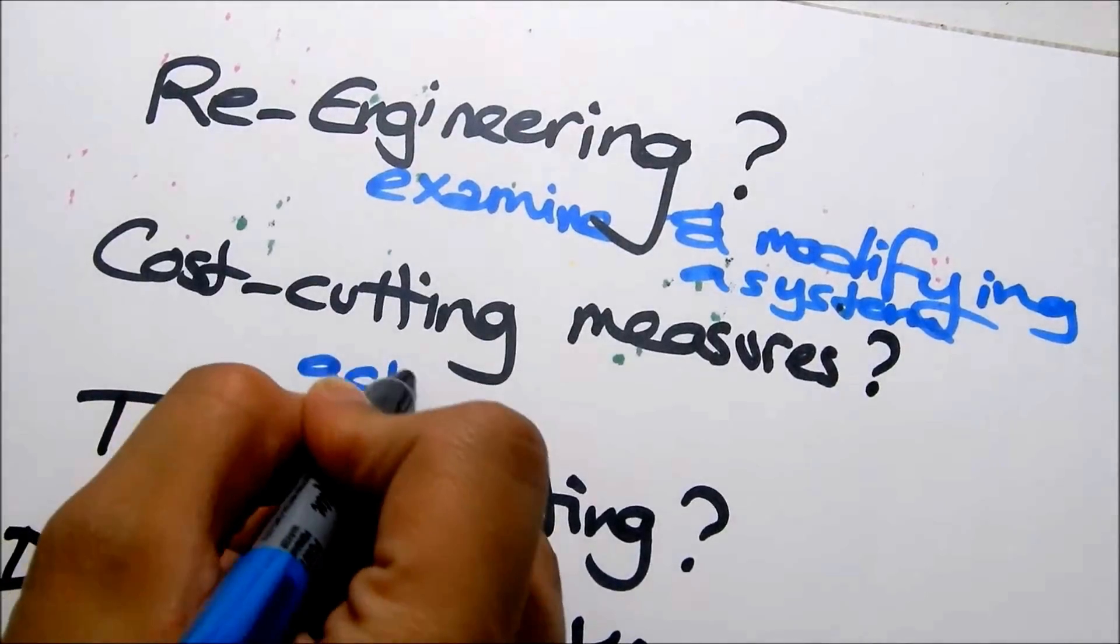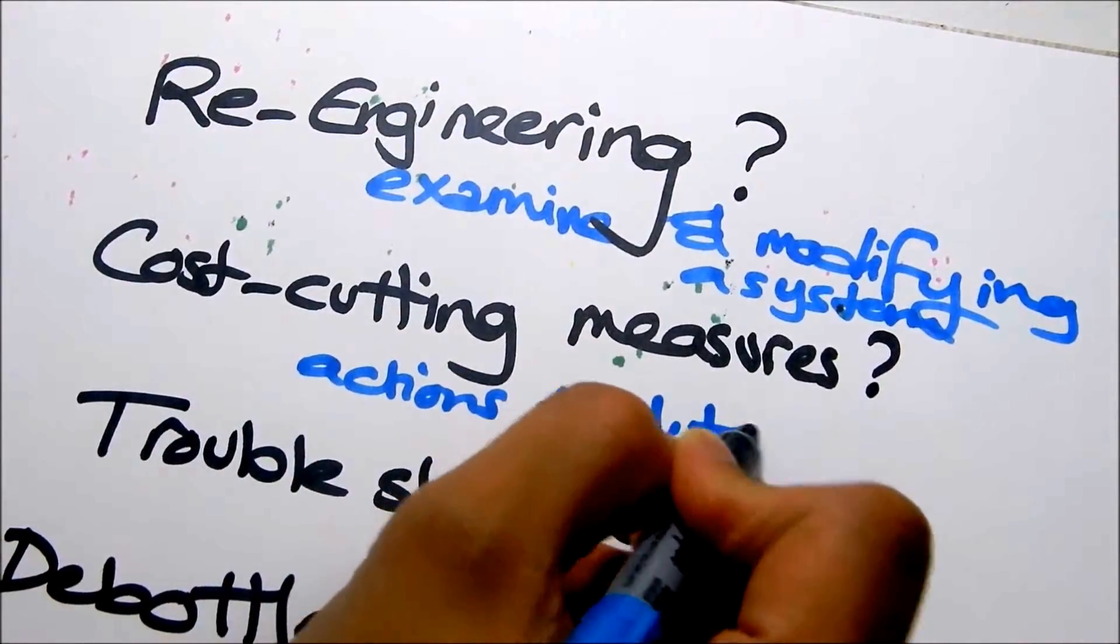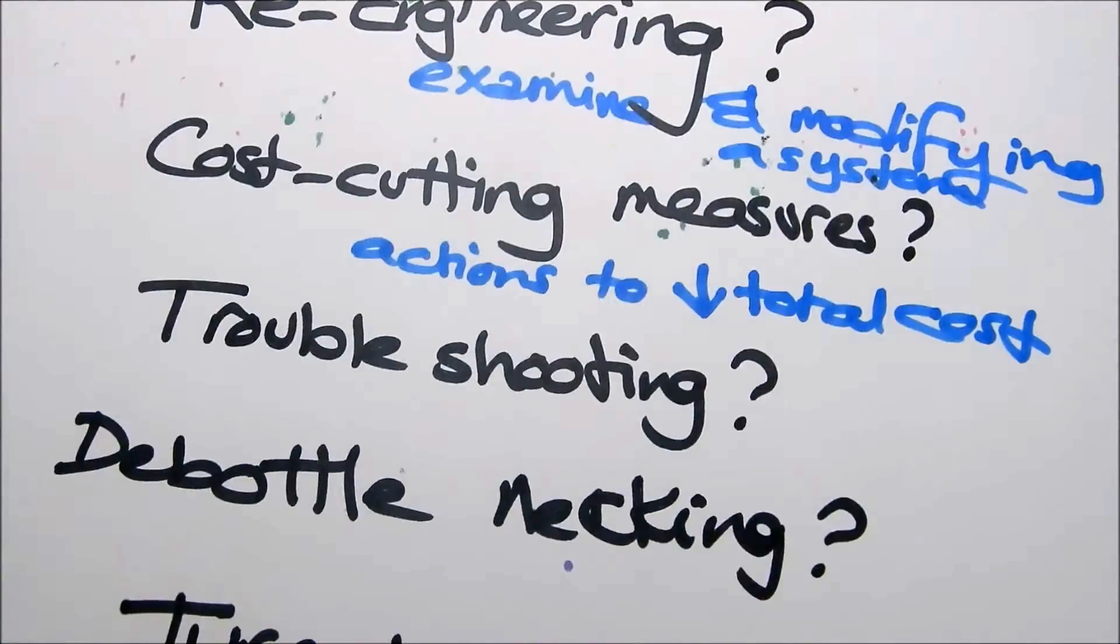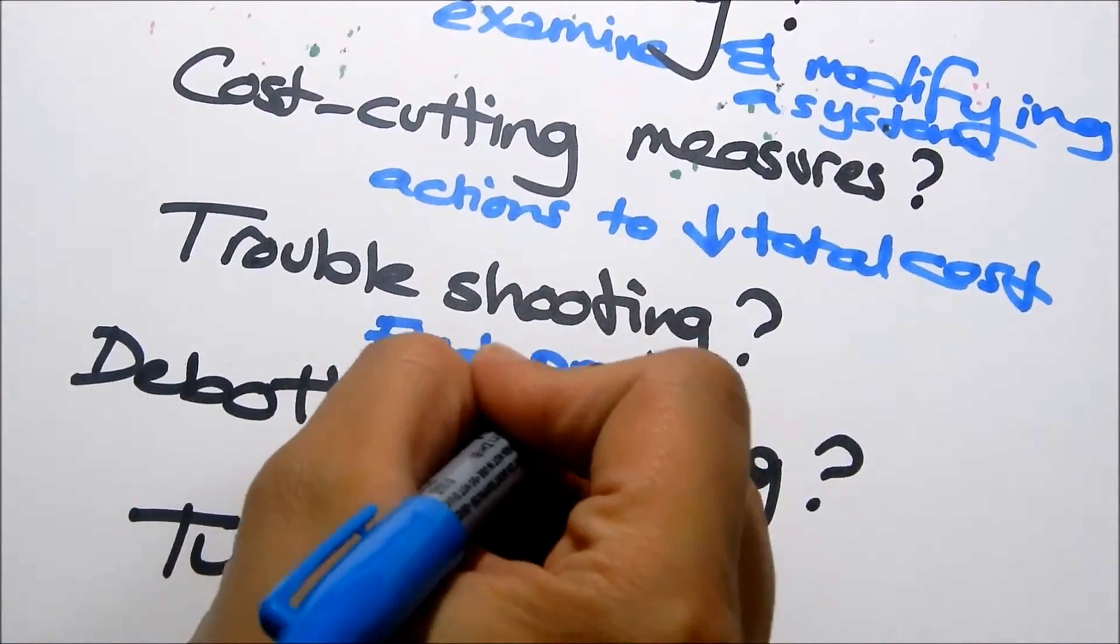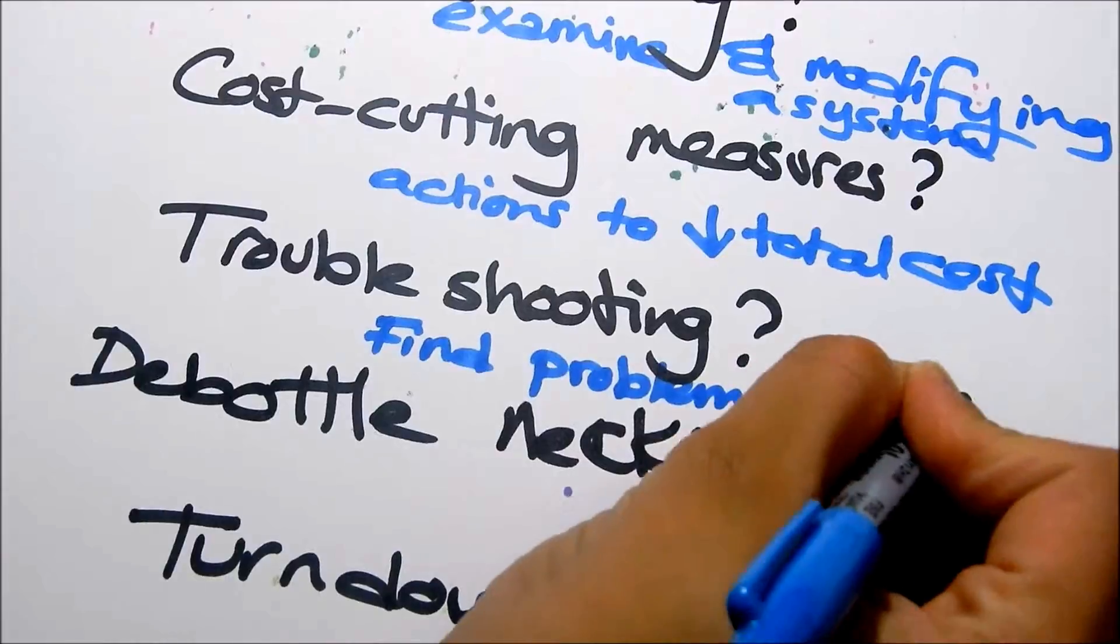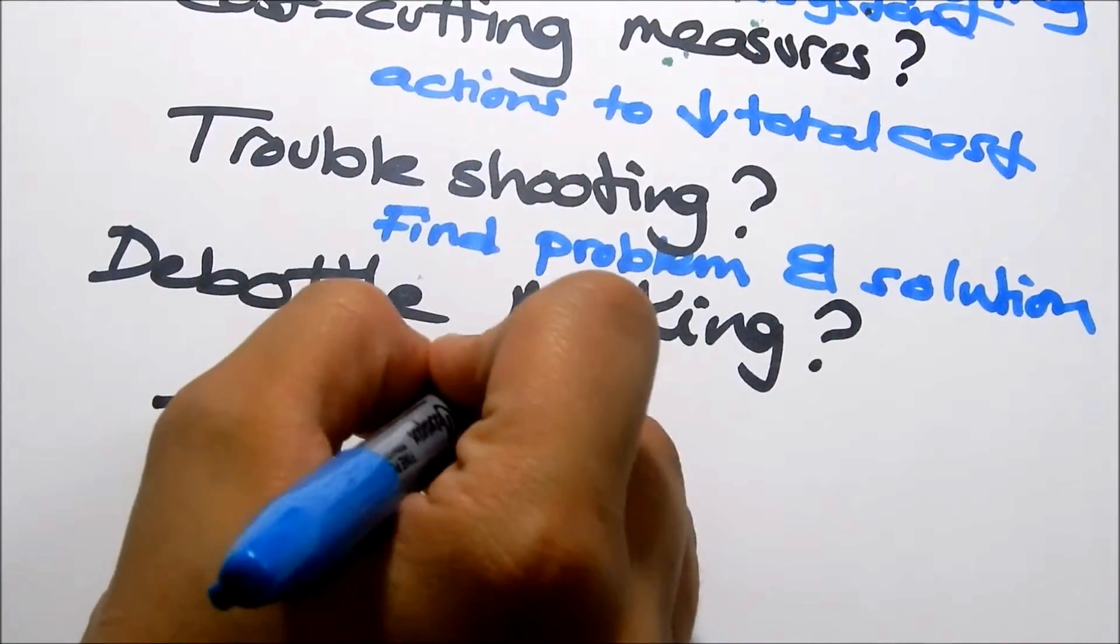Cost cutting measures is any action to lower the total cost. Troubleshooting, what is this? We need to see the problem and the solution. So, find a problem, find a solution.